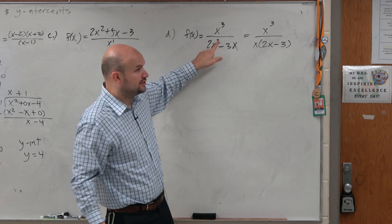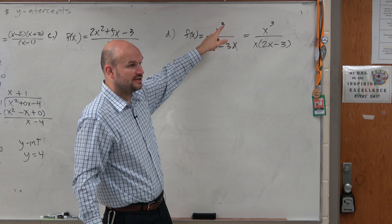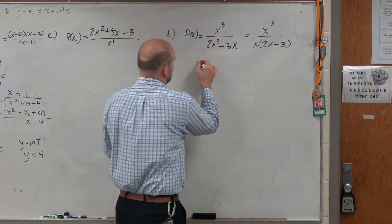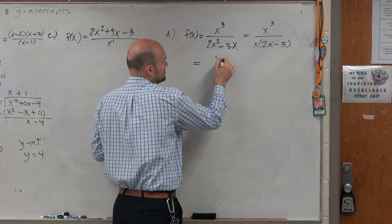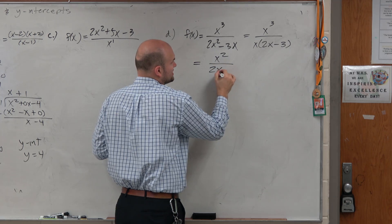Now again, the degree in our denominator is still larger than the degree in the numerator. But this simplifies, this x divides out. So I'm left with an x squared over 2x minus 3.